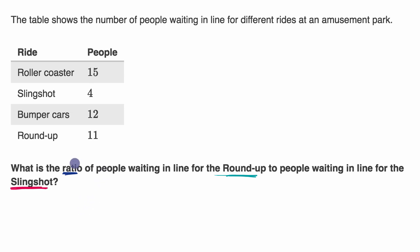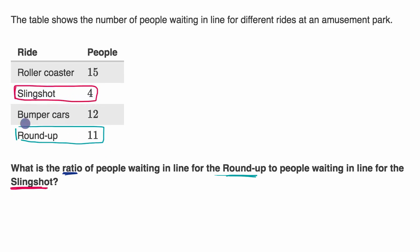We want to know the ratio of the people waiting in line for the roundup — this is the roundup right over here — to the number of people waiting in line for the slingshot. There are 11 people waiting in line for the roundup, and there are four people waiting in line for the slingshot. So the ratio is 11 to four, or for every 11 people in line for the roundup, there are four people waiting in line for the slingshot.